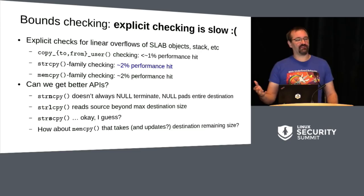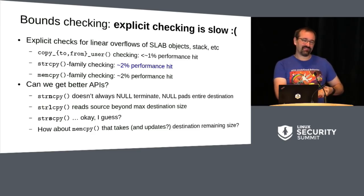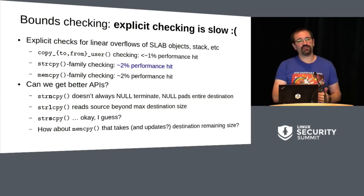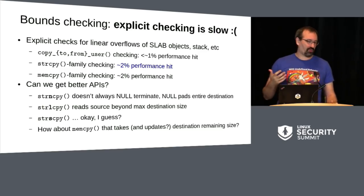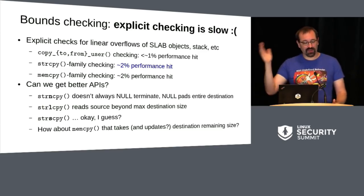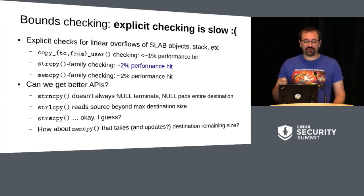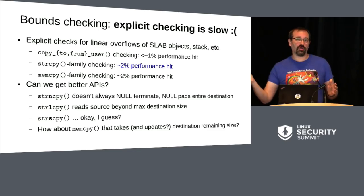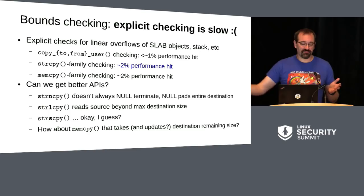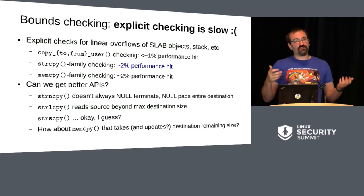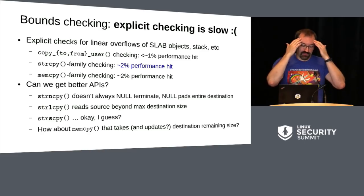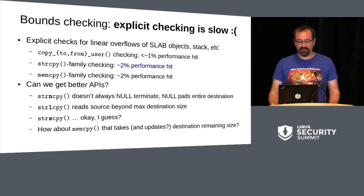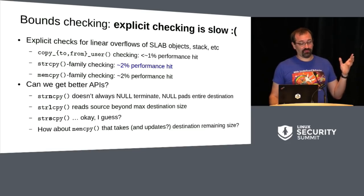This moves on to: can we just get better APIs and get rid of old bad APIs from the standard C library? This tends to be quite a political problem, because in trying to bring developers into the Linux kernel community you don't want to have to teach them an entirely new C API. However we're already doing that — strcpy was no good, let's use strncpy, except strncpy doesn't always null-terminate and if it's too short it null-pads the entire allocation. So we made strlcpy, but that reads the source string beyond the max length. How about strscpy? That seems okay so far. So maybe we can improve memcopy too.